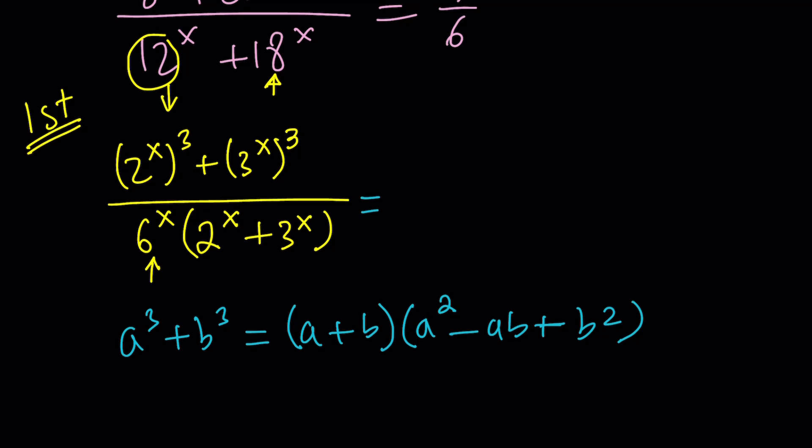a cubed plus b cubed can be written as a plus b. That's how you can factor it. Obviously, that's not the only way to write it. Times a squared minus ab plus b squared. Awesome. You should definitely know this. Now, if you apply it to this problem, it's going to look like this. 2 to the x, 3 to the x. And then multiply by a squared, which is going to be 2 to the x squared. That's 4 to the x. Just square the base. Don't worry about the exponent. Minus, multiply these two things. You hopefully know it's 6 to the x. Plus b squared, which is 3 to the x times 3 to the x, which is 9 to the power x. So far, so good.